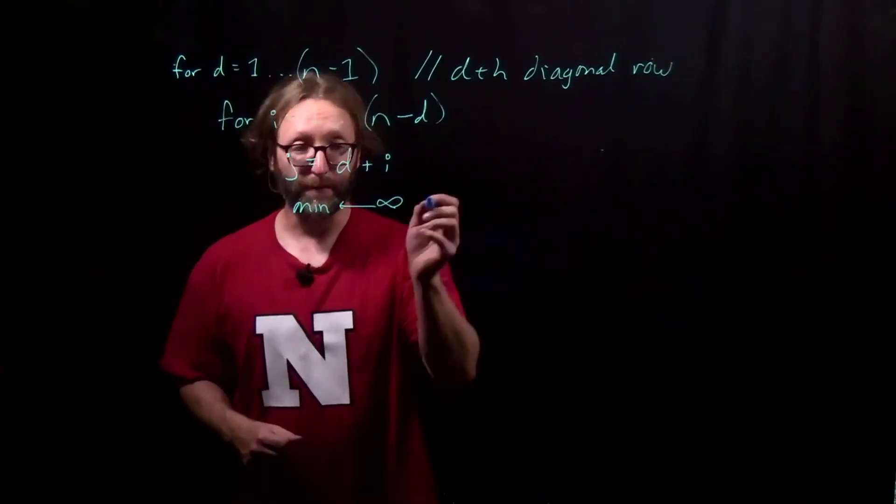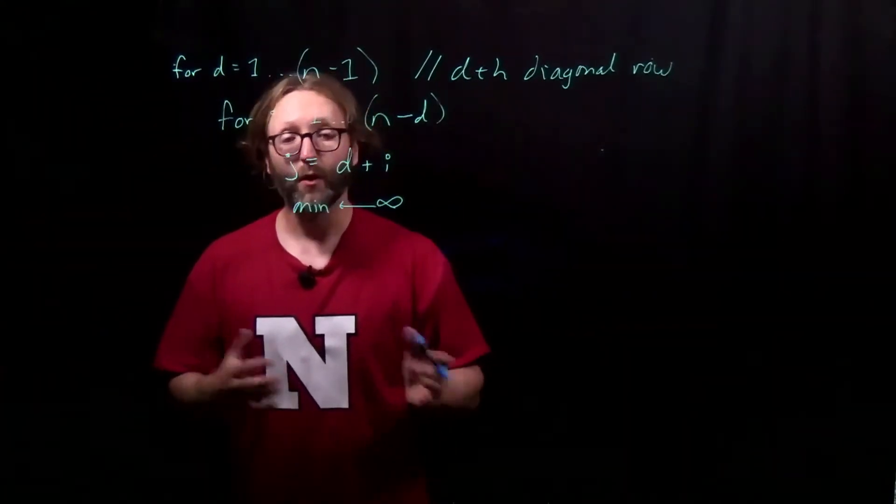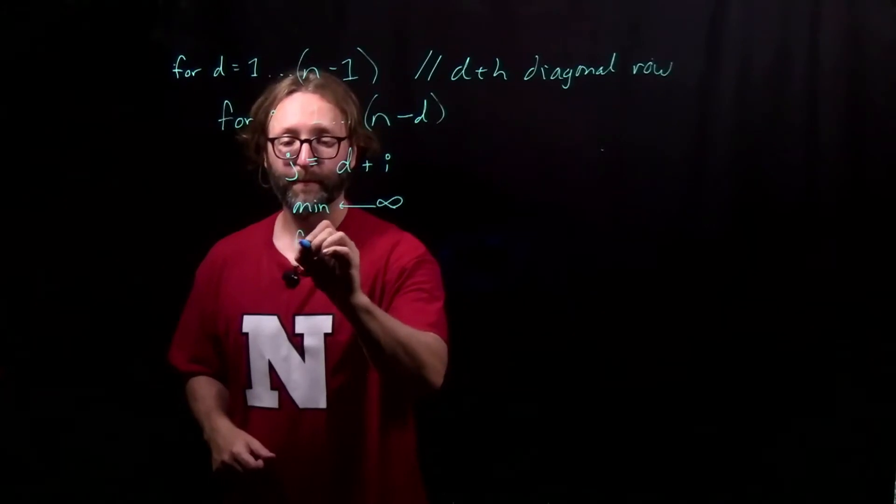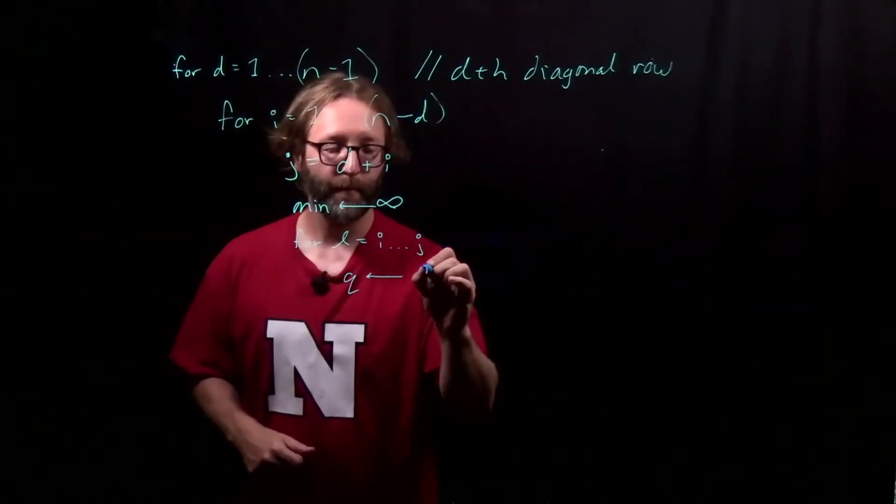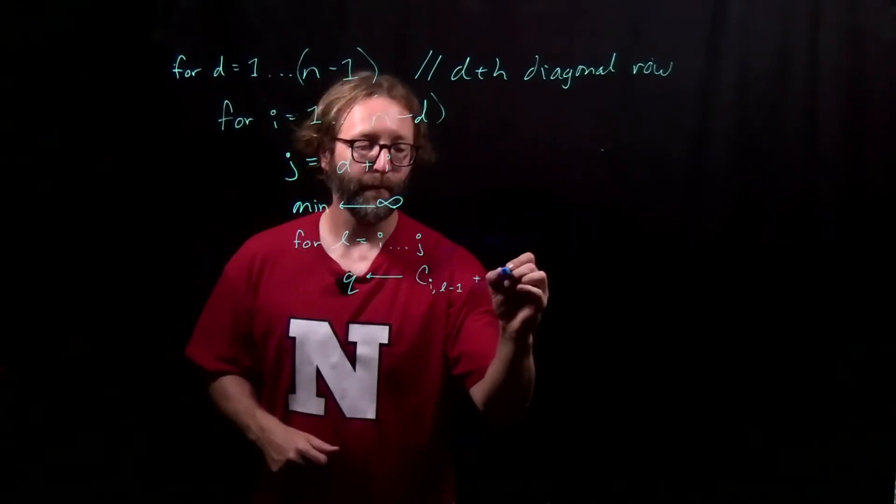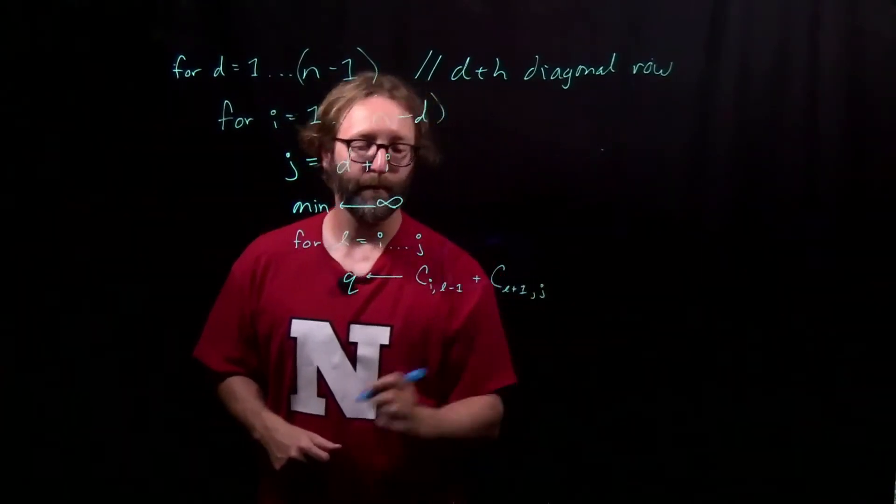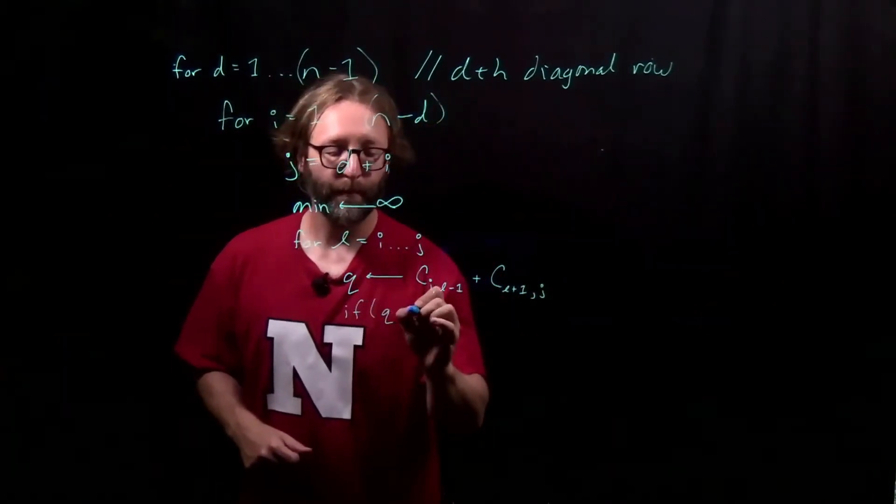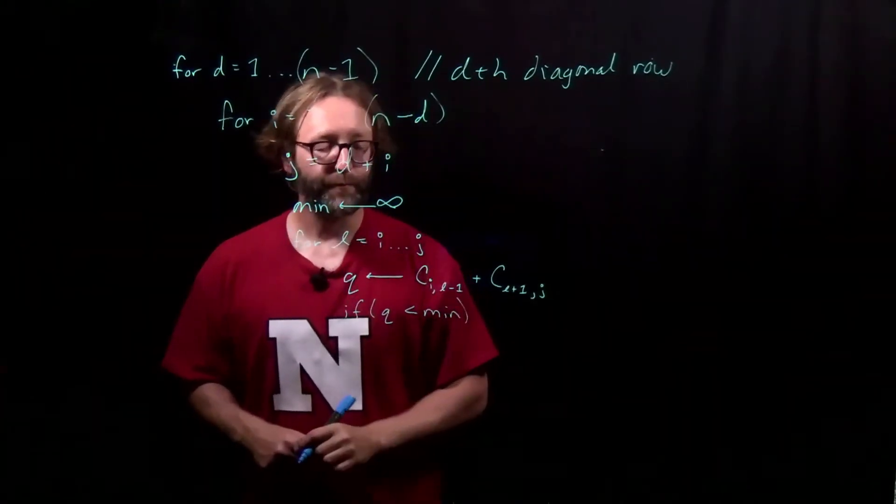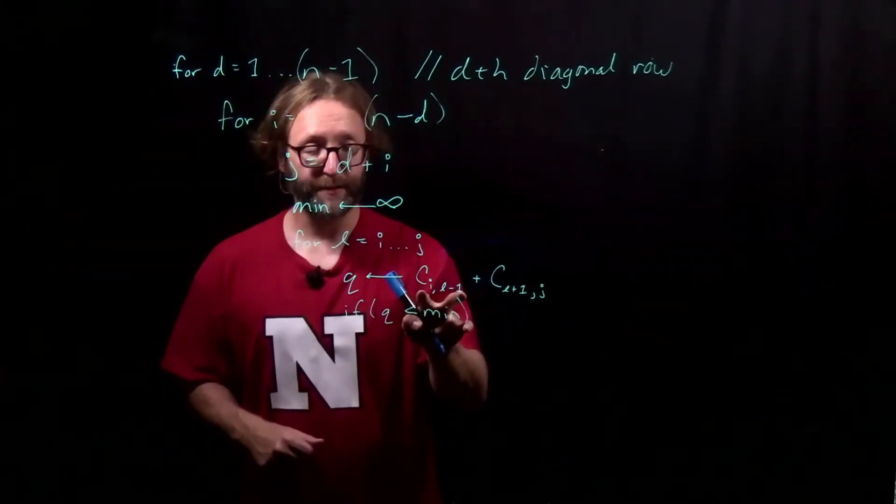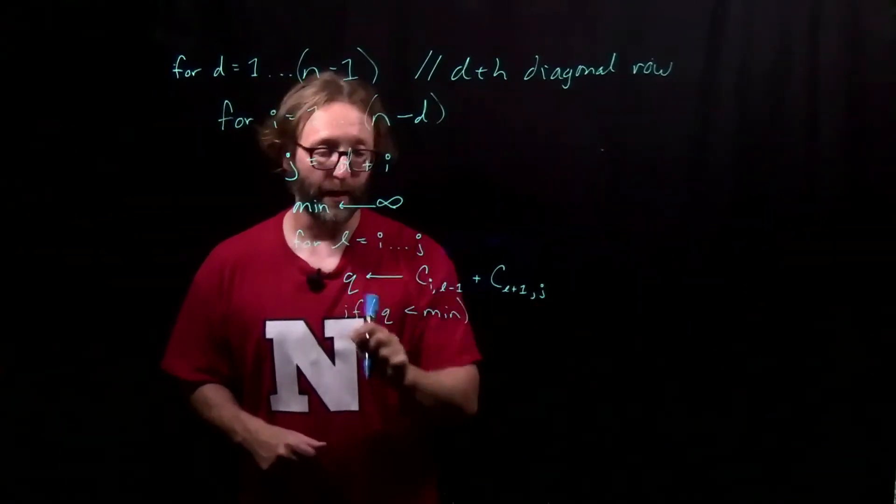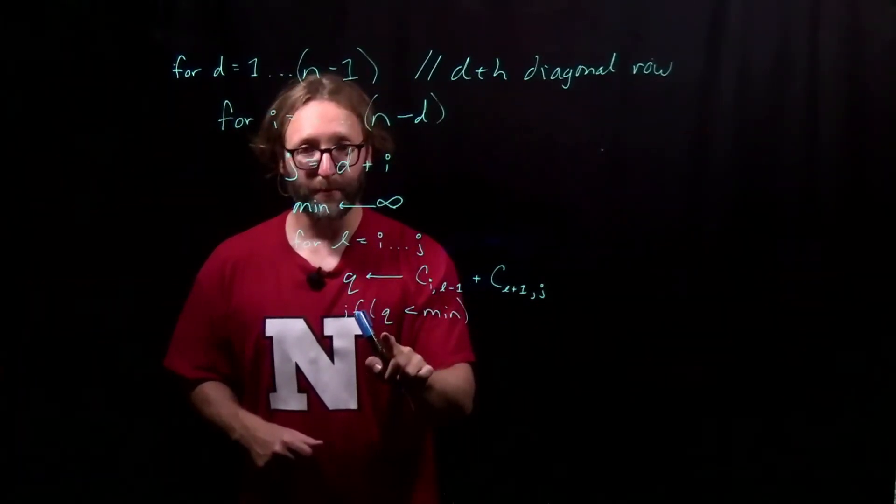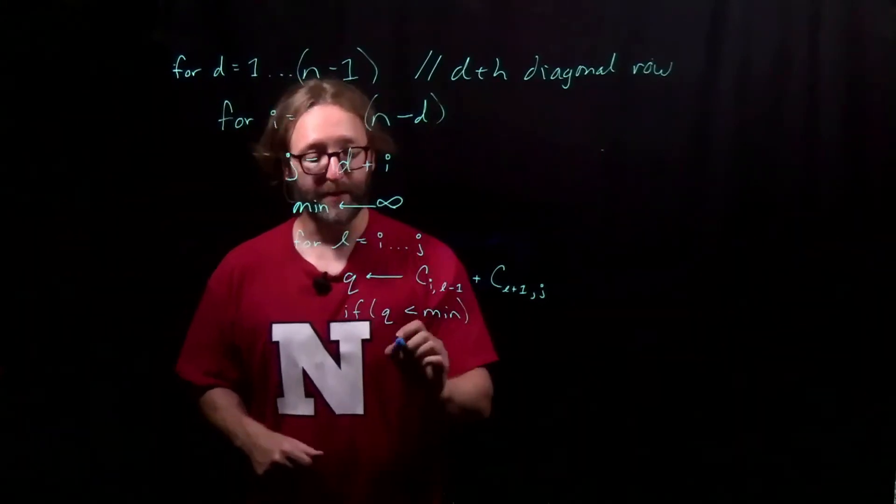I'll initialize min to infinite so that any valid solution will beat that. If the combination of the cost of the left subtree, split along l, and the right subtree, split along l, is less than the cost that we've found so far, then we need to update our minimum.